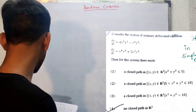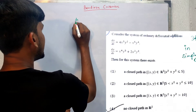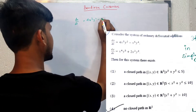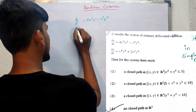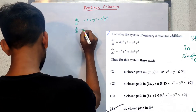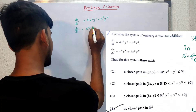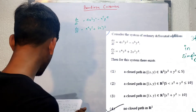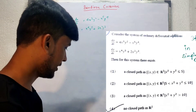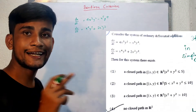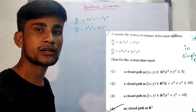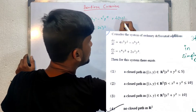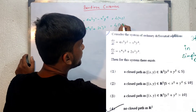Consider the system of ordinary differential equations: dx/dt = 4x³y² − x⁵y⁴, and dy/dt = x⁴y⁵ + 2x²y³. For this system, the question asks what exists. This question is directly based on the Bendixson criteria. If we take this as F1(x, y) and this as F2(x, y), then first we have to check whether the divergence of F — that is, ∂F1/∂x + ∂F2/∂y — is identically zero or not.